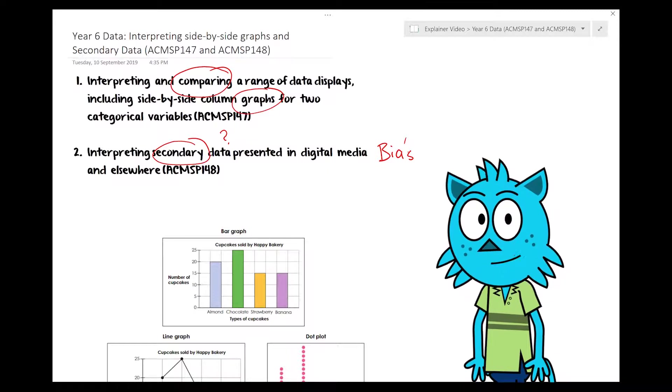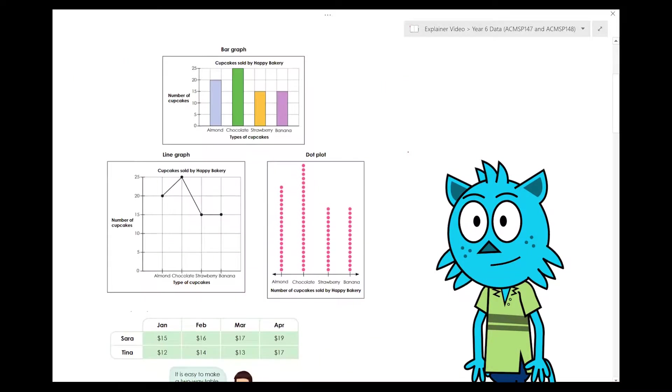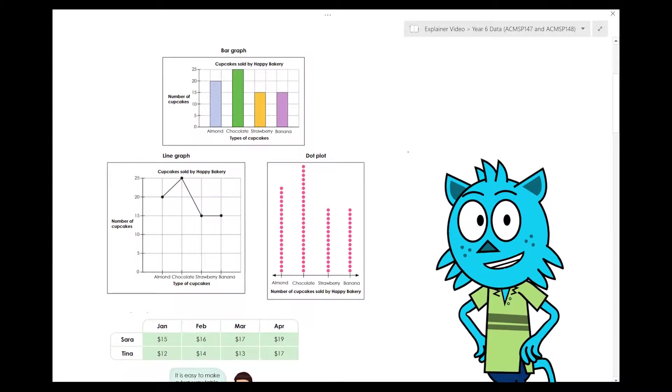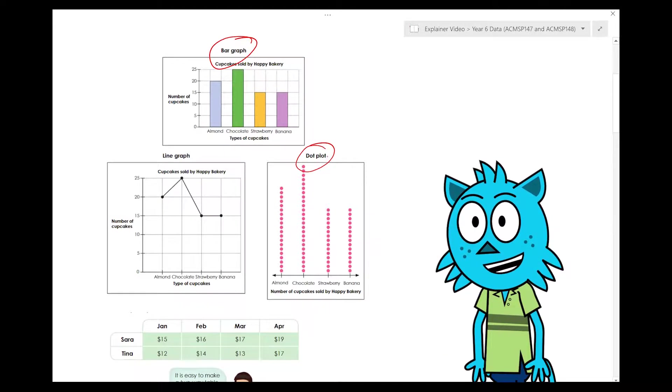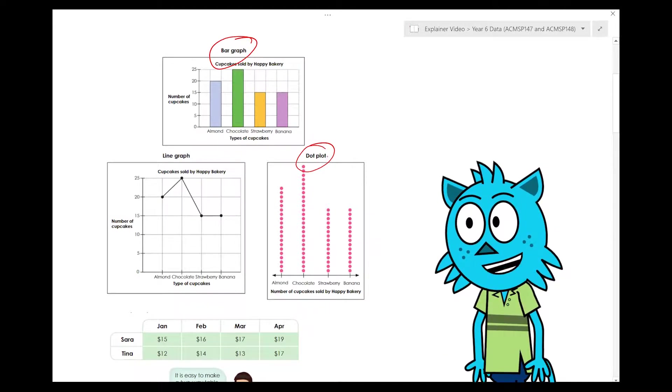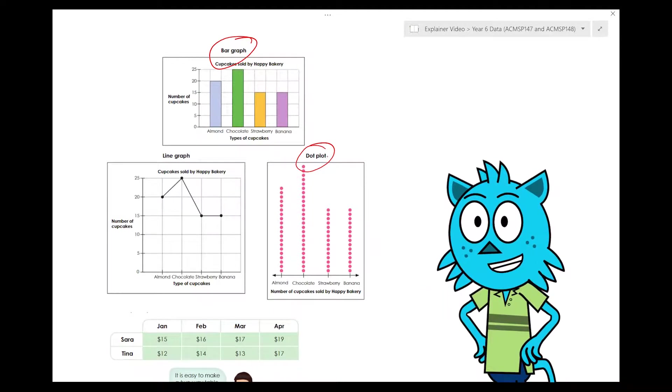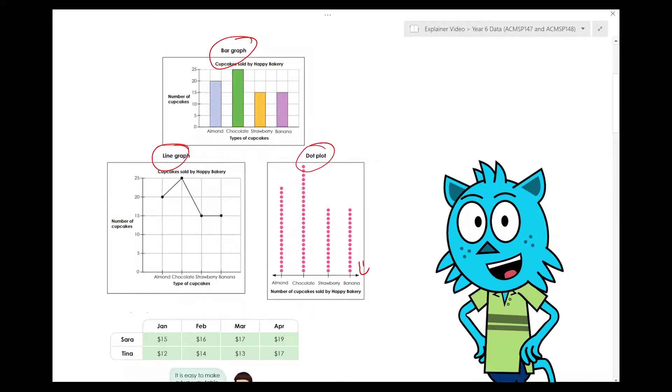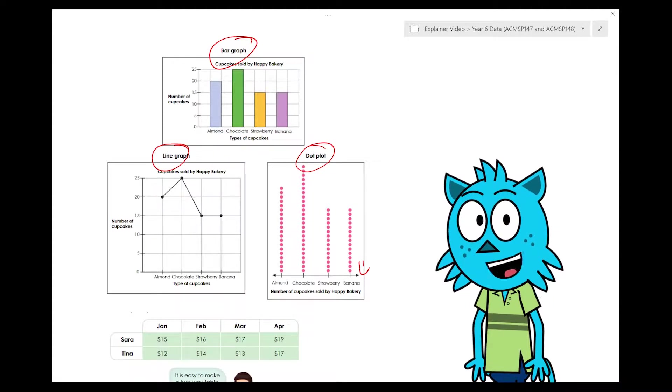First of all, let's quickly look at some examples of different graphs we could use. So we have our simple bar graph, which is one of the first graphs we learn, along with dot plots, which can often look like picture graphs. You can just replace the dots with little pictures. And we also have our line graphs. So all these types of graphs are really great ways of showing information from a survey, such as in our bar graph.